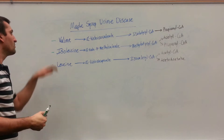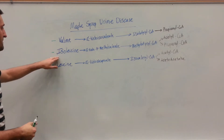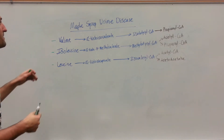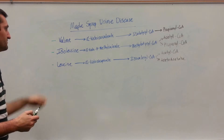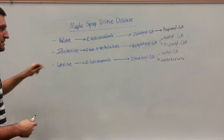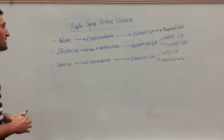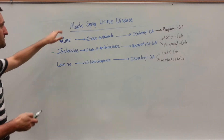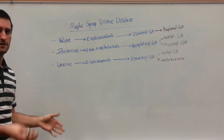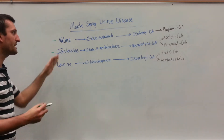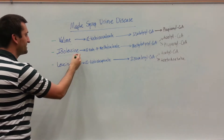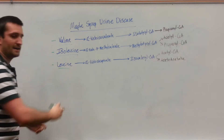What is unique about each of these three? Well, they all have branched chains. So these are all the branched-chain amino acids. Maple syrup urine disease is going to be the inability for the body to break down these branched-chain amino acids.